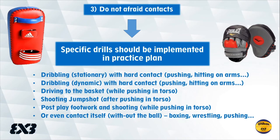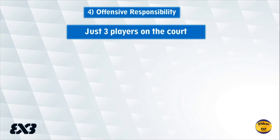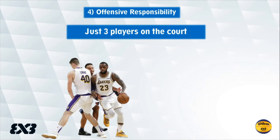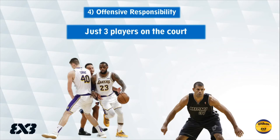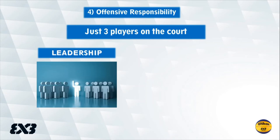Specific drills with contact should be implemented in the practice plan. Of course, you should use some boxing equipment for that. There is a whole pack of drills you can use for every basketball skill. The next chapter is offensive responsibility — a really important factor for every 3-on-3 player. With just three players on the court, you cannot be a specialized player like in 5-on-5, for example just setting screens, being the playmaker only, or just rebounding.